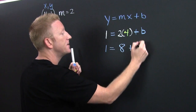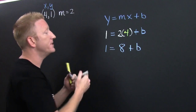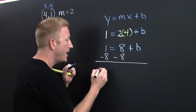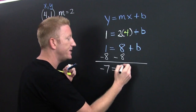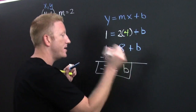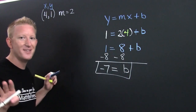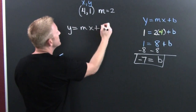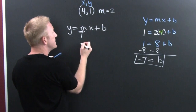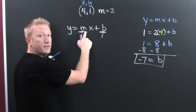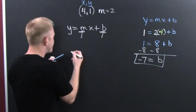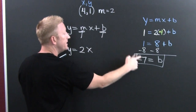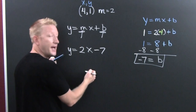One is equal to eight plus b. I'm going to subtract that eight off each side — what I do on one side I must also do on the other — and I find that b is going to be negative seven. Now that we have that b, we go back to y equals mx plus b. We replace the slope and the b with our values: y equals two x minus seven.